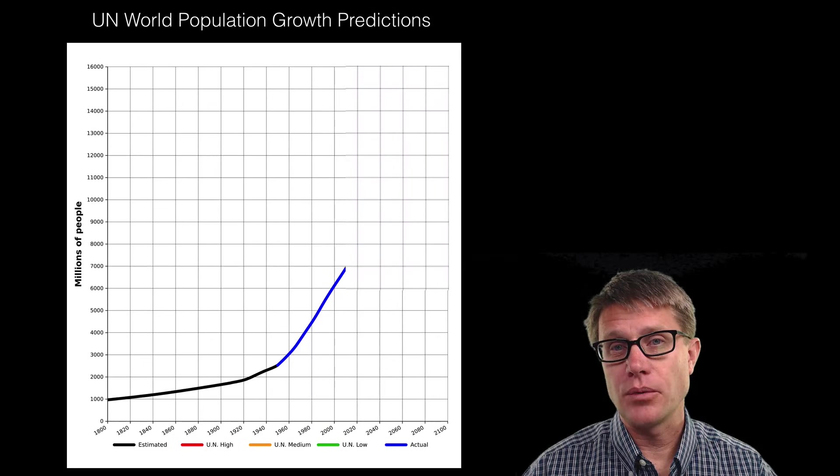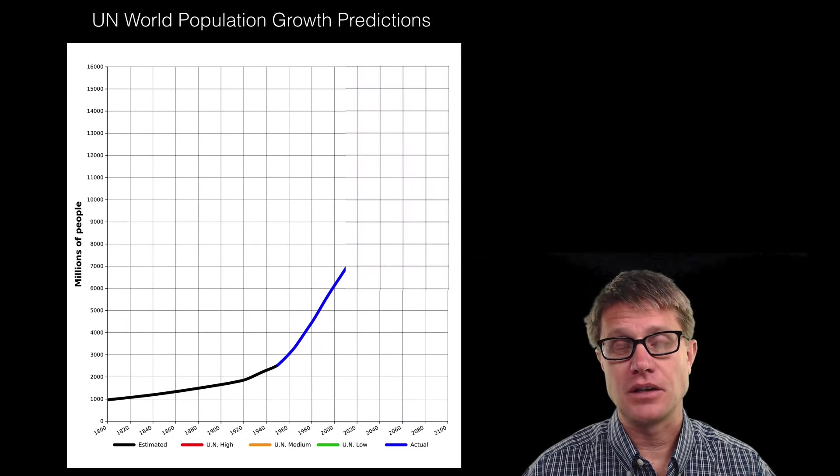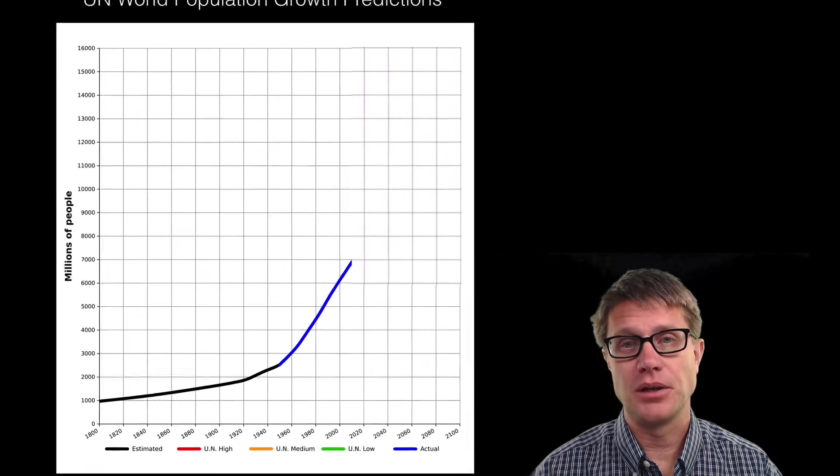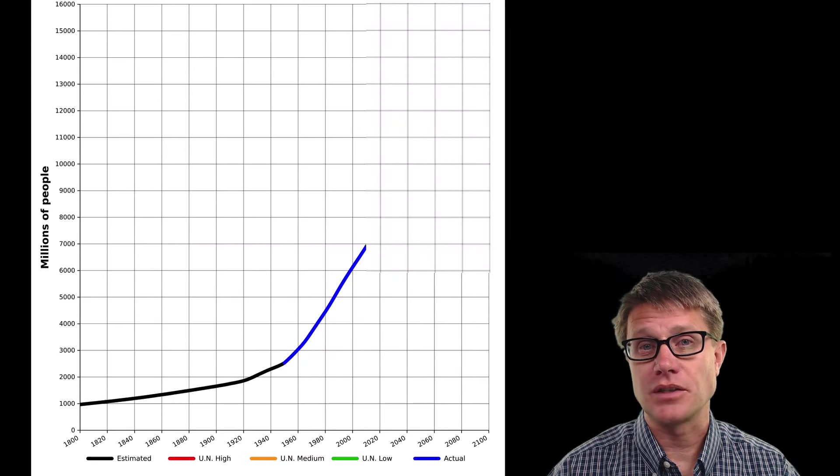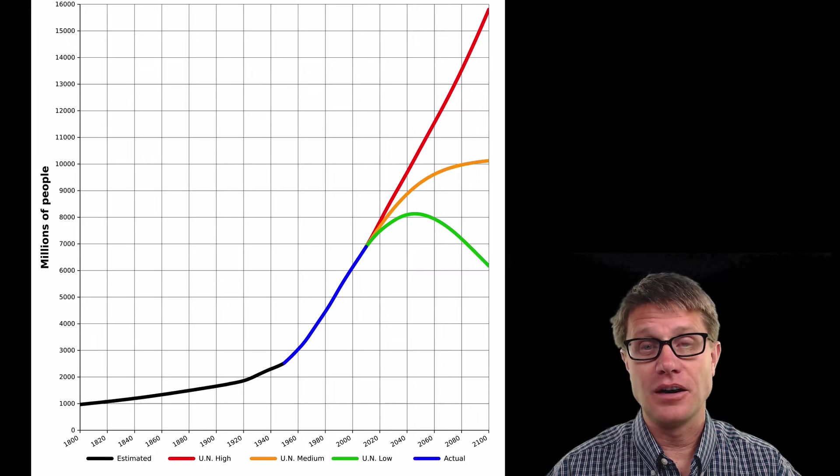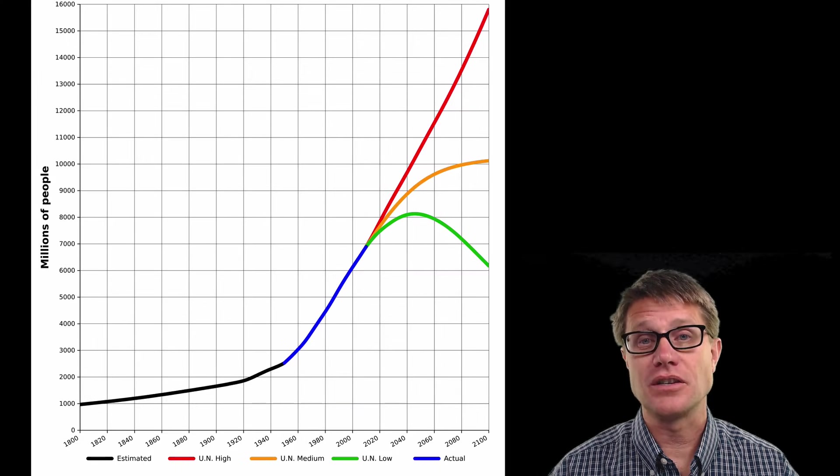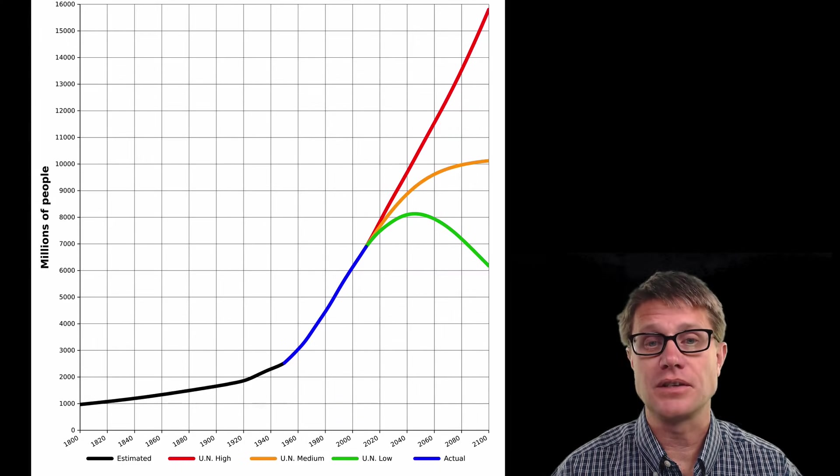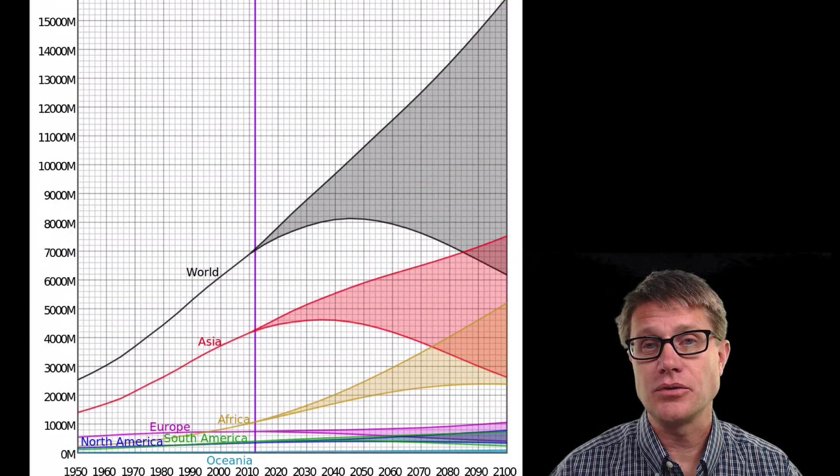And so if we look at where we are today, 2015, there are 7.3 billion people on our planet. What does the UN predict our population is going to do into the future? Well we have got high, medium and low predictions. So which of these is right? We do not know. We will have to see what is going to happen into the future.